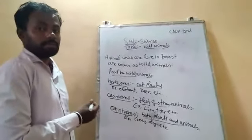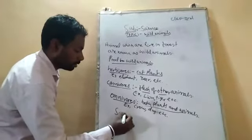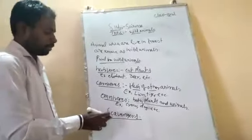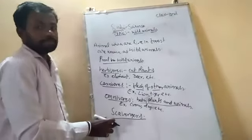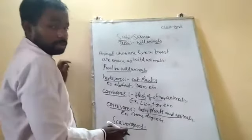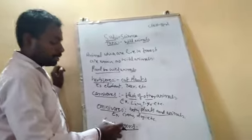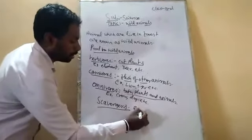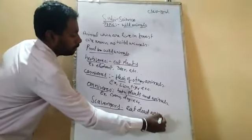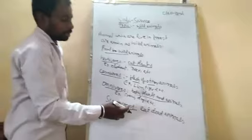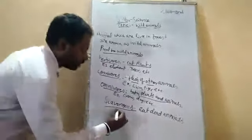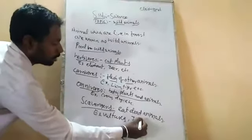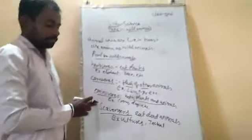The next type of animal in the forest is the scavengers. Scavengers eat dead animals — they will eat the dead animals. These animals are known as scavengers. Examples are vultures and jackal. They are known as the scavengers.